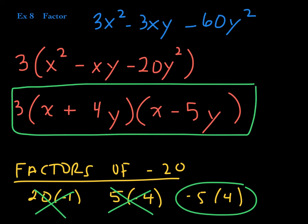Since we need negative 20y squared, each factor needs a y variable: 4y times negative 5y gives negative 20y squared. So the complete factorization is 3(x + 4y)(x − 5y). To check, distribute the two binomials first, then distribute the 3, and you'll get the original trinomial right back.